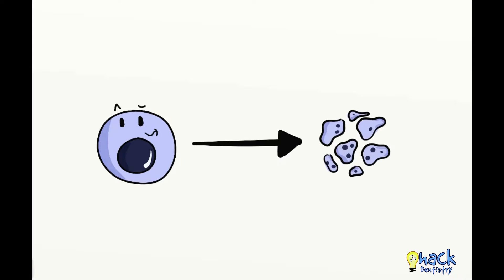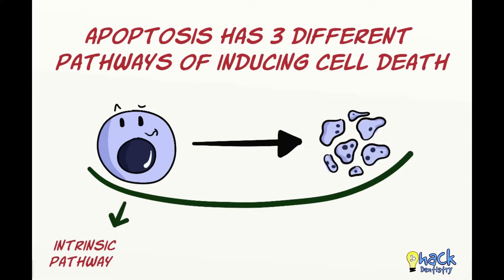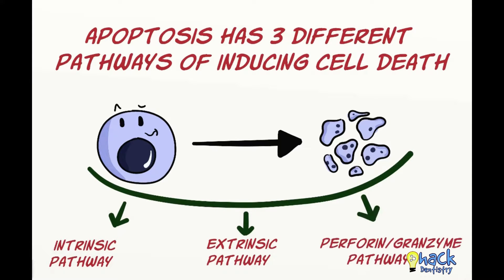A cell can undergo apoptosis due to several reasons and depending on the etiologic factors may have three different pathways of initiating cell death. Apoptosis could be initiated by signals from the intrinsic pathway, the extrinsic pathway and the perforin-granzyme pathway.